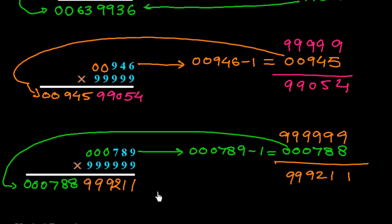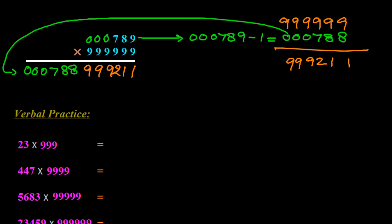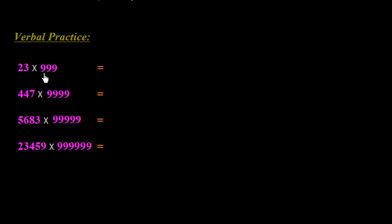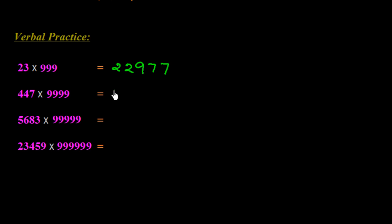In this way we can easily find the multiplication of a number with a series of 9s. For a verbal shortcut: write one less than the number on the left, then place 9s in the middle according to the difference between the digit count of the series of 9s and the given number, then subtract the number from that many 9s for the right side.